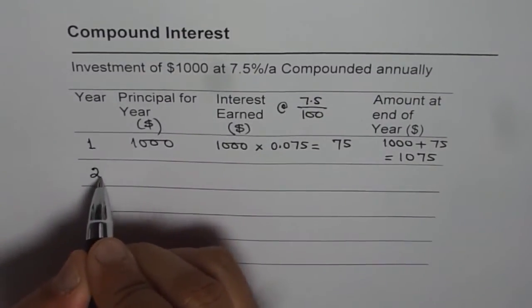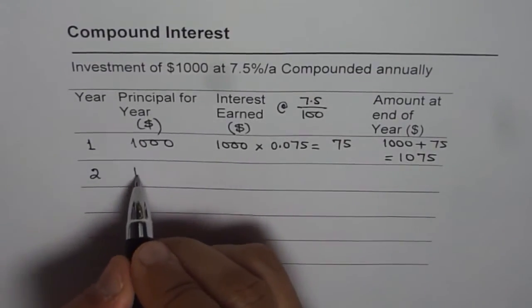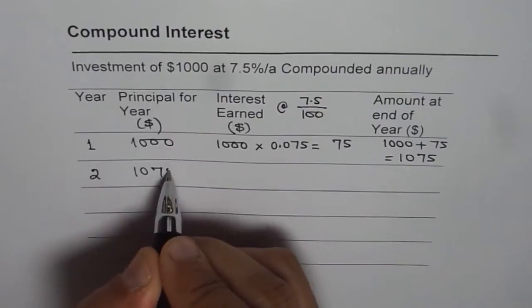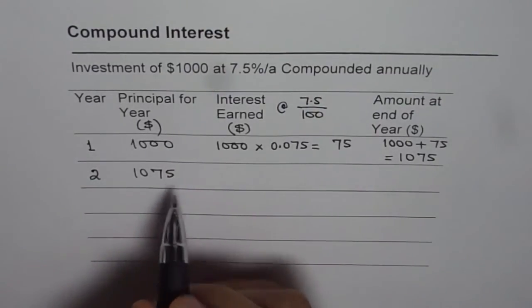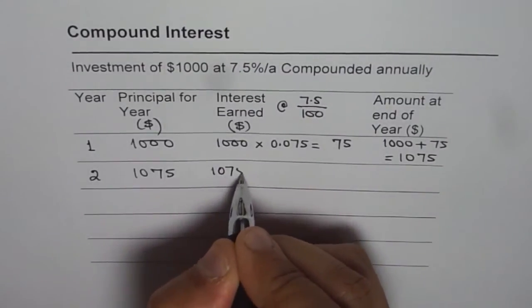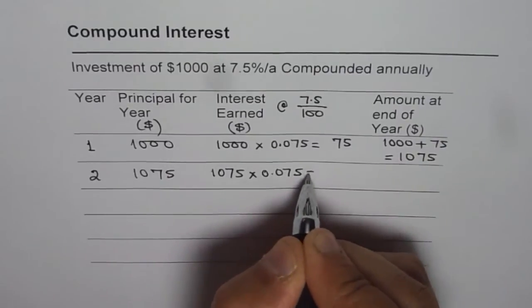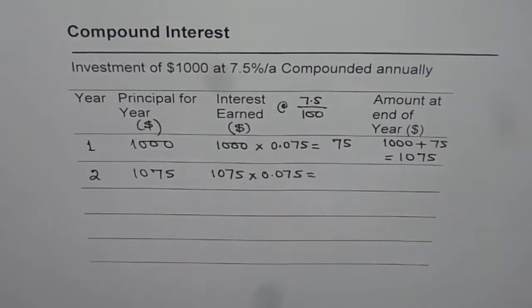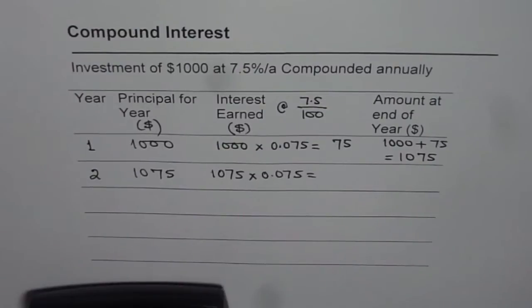At the beginning of the second year, principal amount becomes $1,075, not just $1,000 which was invested. We will now earn interest on $1,075 at the same rate. Interest earned will be 1,075 times 0.075. That makes the difference and that is why we always get much higher interest when the amount is compounded.